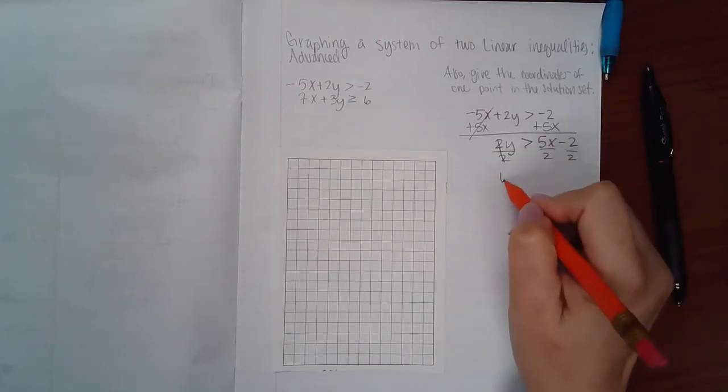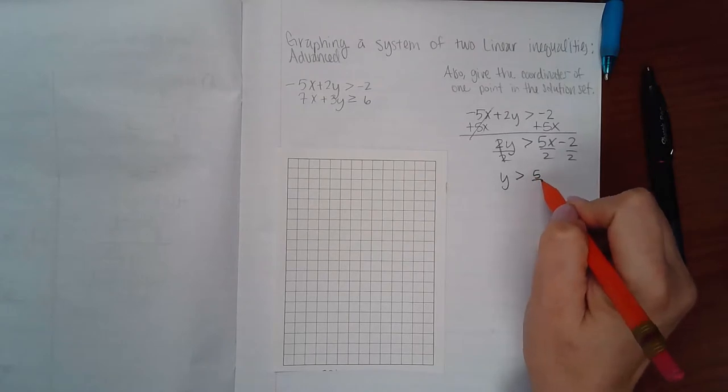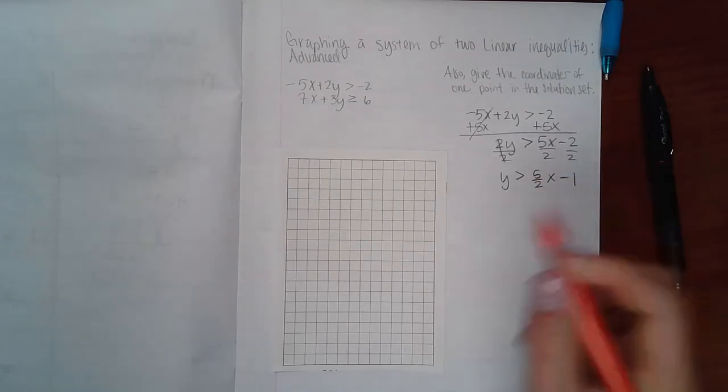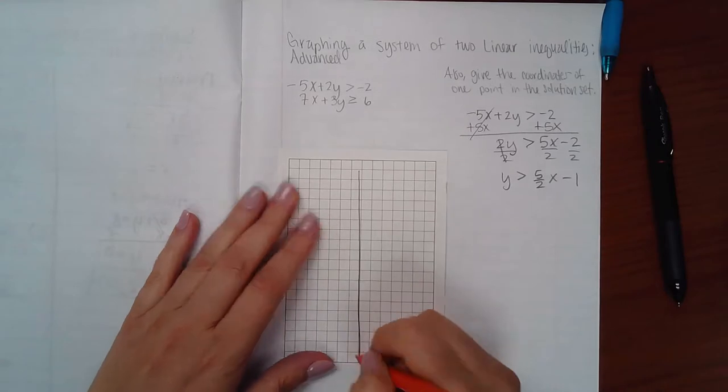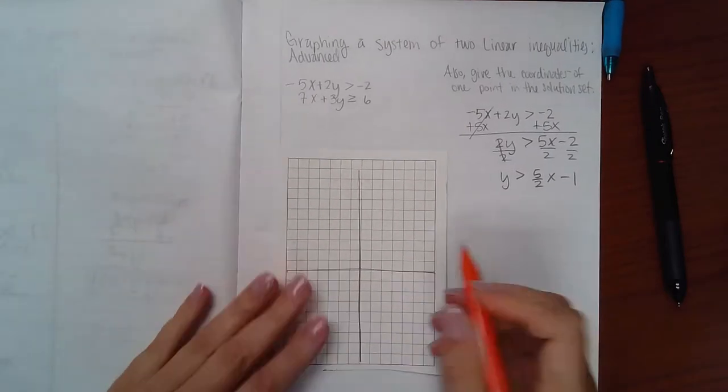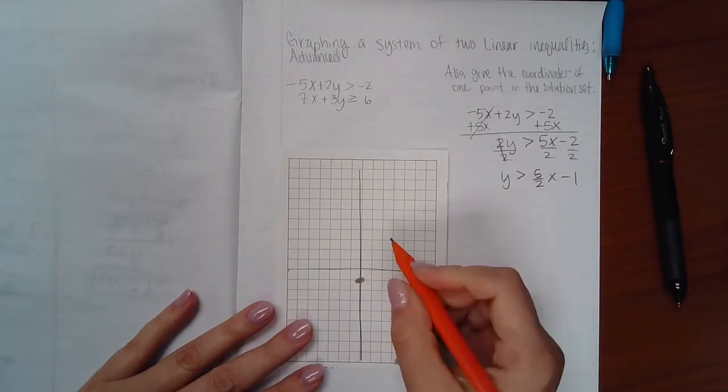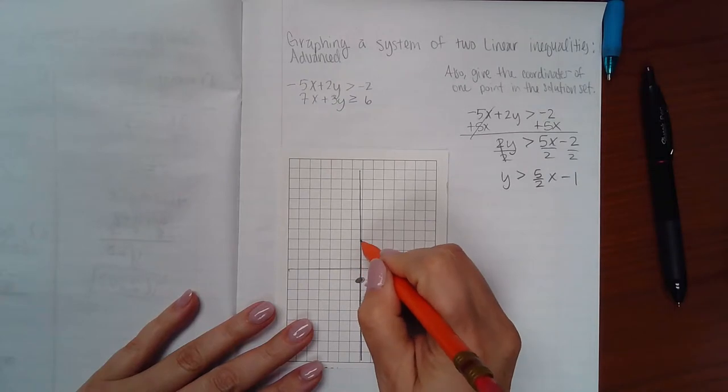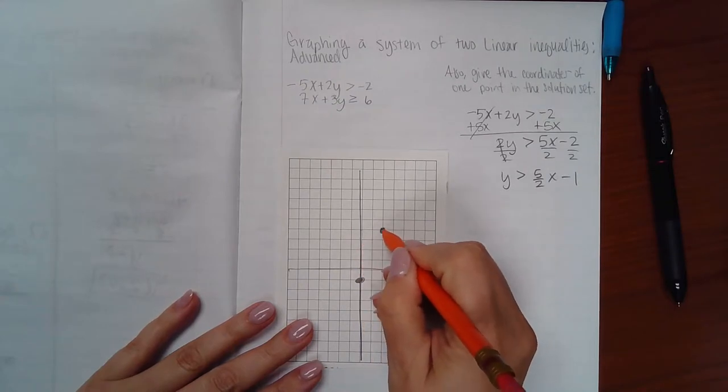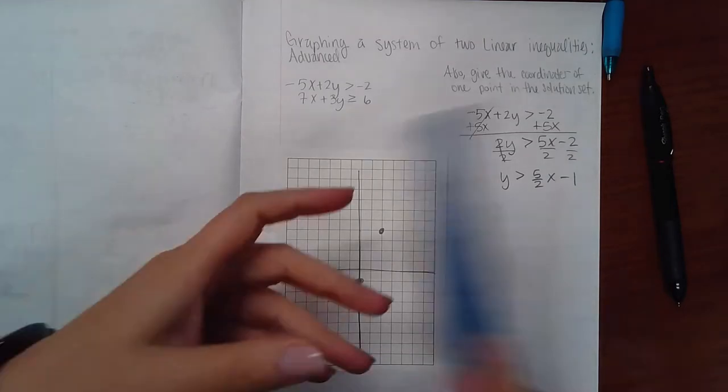Here I only need to divide by a positive two, so my symbol does not flip over. When I solve that, I end up with negative one for my y-intercept and 5/2 as my slope, so I end up with this line here.